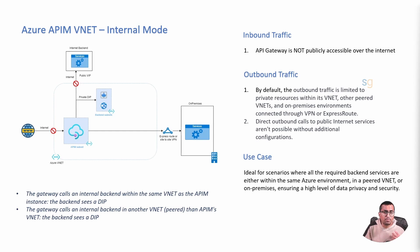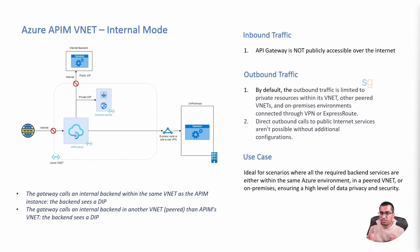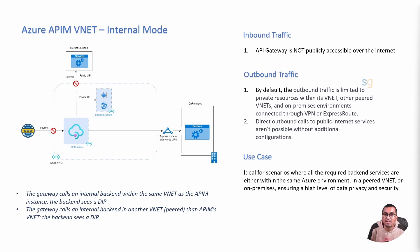By default, outbound calls to public internet APIs are not possible when the API Management instance is isolated within a VNet in internal mode. The instance can connect to backends within the same VNet; if the VNet is connected to on-premises via ExpressRoute, it can reach on-premises backends; and if the VNet is peered with another VNet, it can reach those peered VNet backends as well. But unlike external mode, by default it cannot reach the public internet. In summary, while external mode offers flexibility for both public and private backends, internal mode leans heavily towards a secure private-only communication setup.